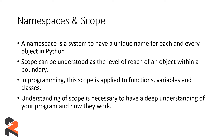Now what are namespaces and what are scopes? According to the definition, a namespace is a system to have a unique name for each and every object in Python, and scope can be understood as the level of reach of an object within a boundary. Let's look at a basic example.